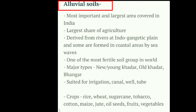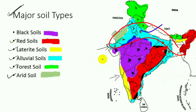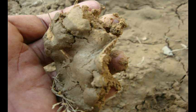Let's discuss all one by one. First we will discuss about alluvial soil. Alluvial soil is the most fertile soil and it covers the largest area of our agriculture. In our northern plains, alluvial soil is found the most. It is the most important and one of the most fertile soils among all soil groups.